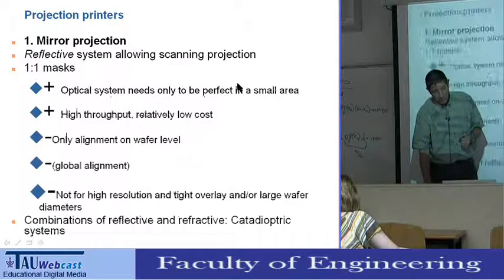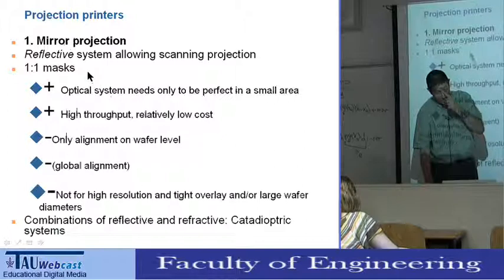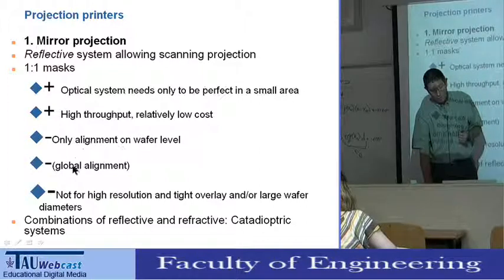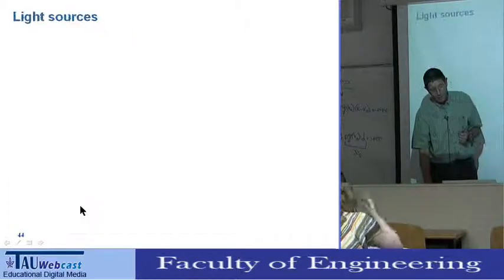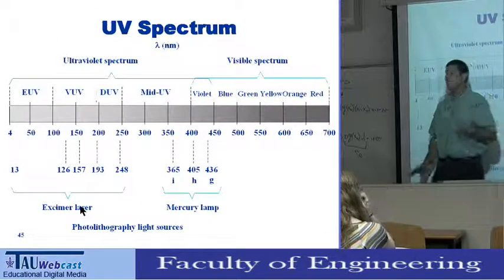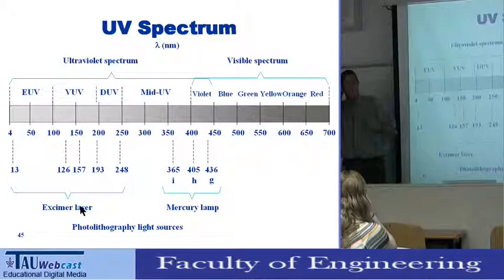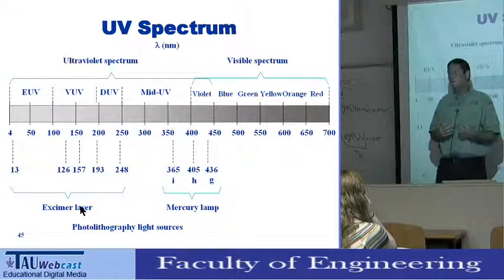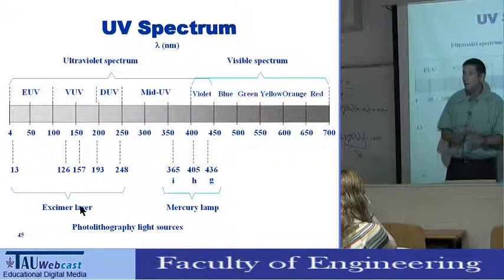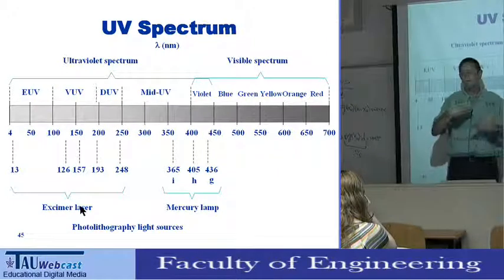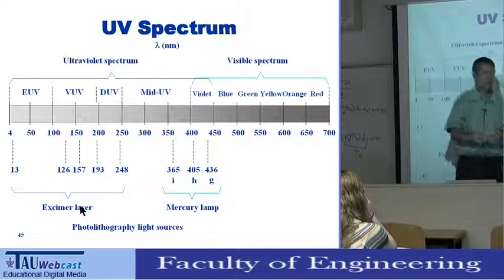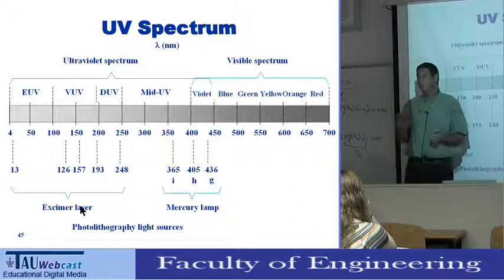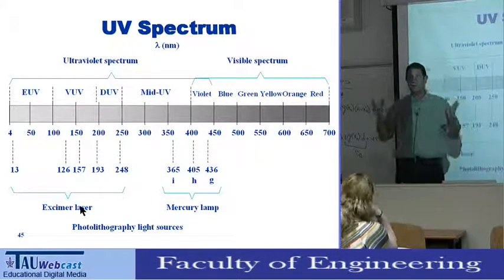The Meyer projection system is a high-throughput optical system requiring only global alignment, but not for high resolution. Now let's go one step backwards and give more details about the system. What I've done so far is give a general overview of what it means to do lithography. Now I'm going to review it again in more detail and break it into components. The first component is the light source — this answers why we don't use lasers and why we use mercury arc lamps.